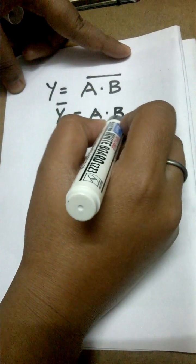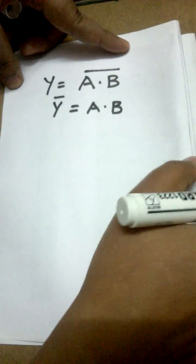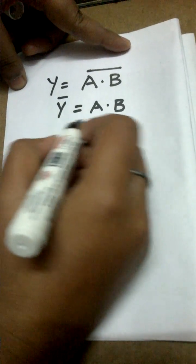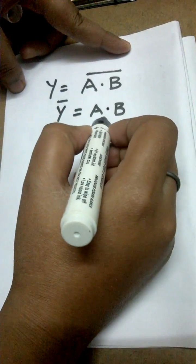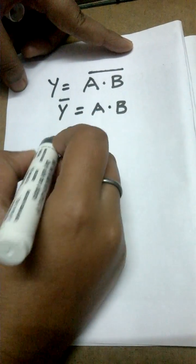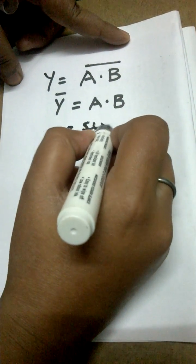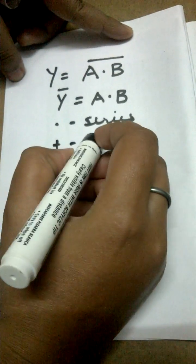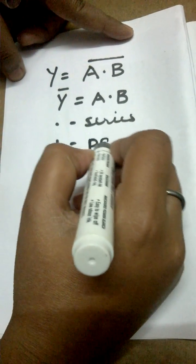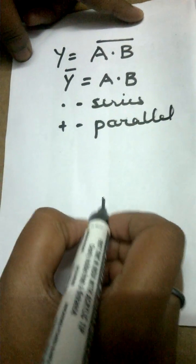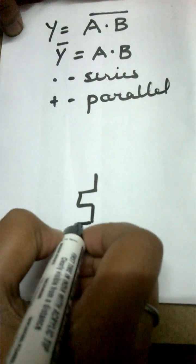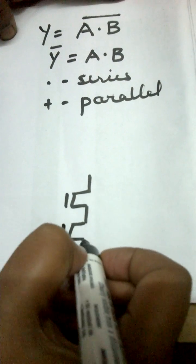Now what we are going to do—first of all we will write down what is Y bar. Y bar, we can see, is equal to A dot B. Now if I want to realize this using the N logic block, always remember: a dot will always represent two NMOS devices in series, and a plus will represent two NMOS devices in parallel.